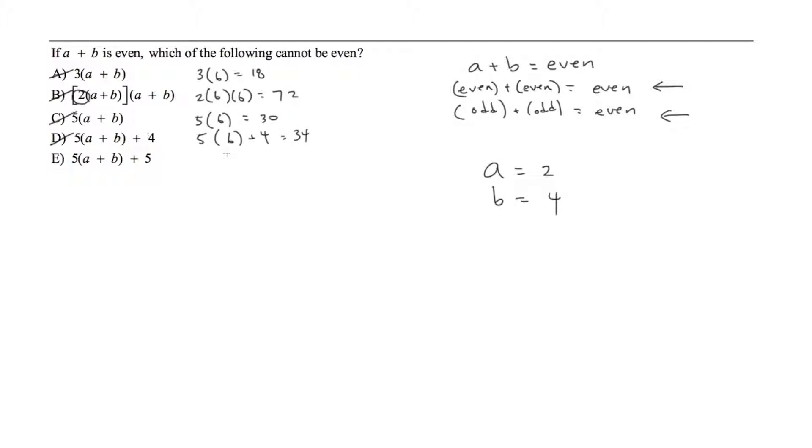Hopefully our answer is E since that's all that remains but we should check it anyway. We have 5 times 6 plus 5 and in fact we do get an odd number. So E is the right answer choice.